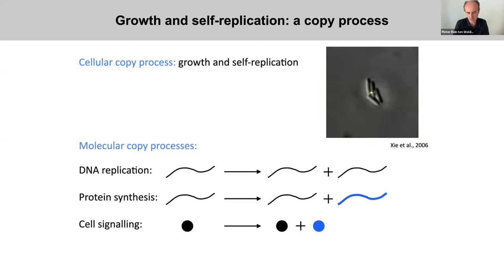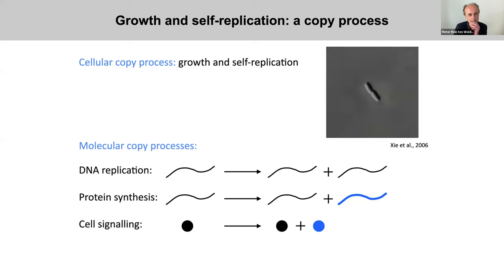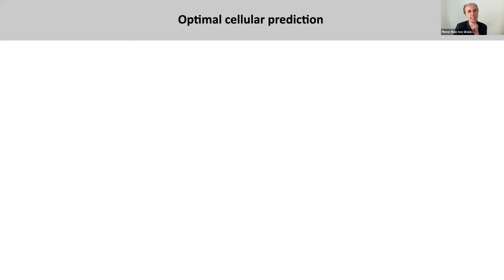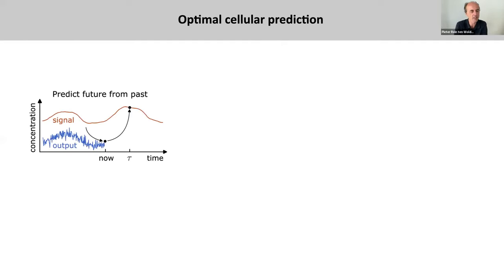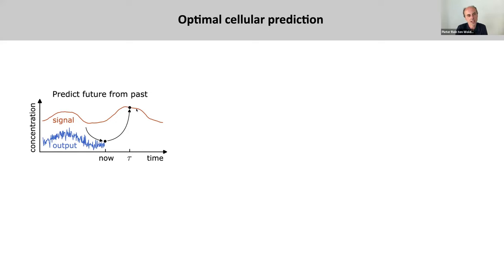To illustrate that, I would like to briefly highlight a recent result from our group. We've been interested in cellular prediction — this question of how accurately can cells predict future changes in the environment. The general setup is that here you have an input signal that fluctuates in time, relayed via some signaling system to the output signal shown in blue.